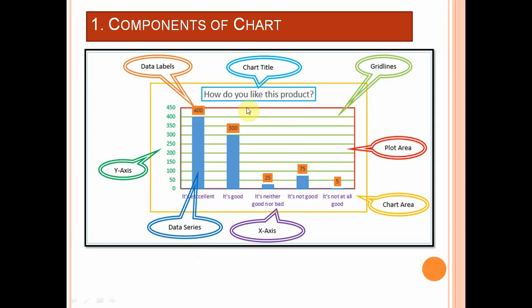First of all, we will be discussing about the different components of the chart. These are the different components: chart title, grid lines, plot area, chart area, x-axis, data series, y-axis, and data label. The image shown is of a column chart — this is basically a column chart.